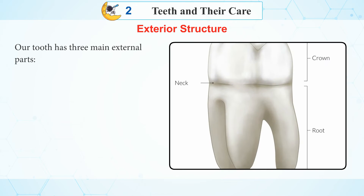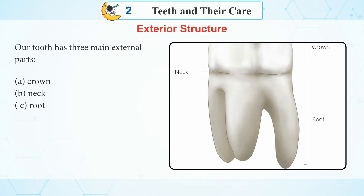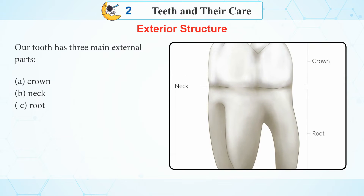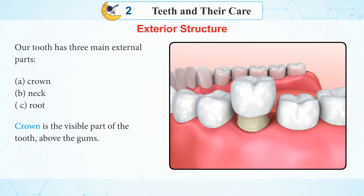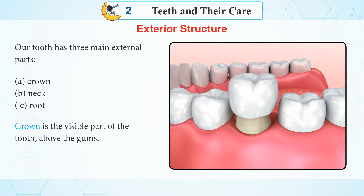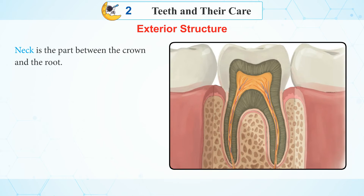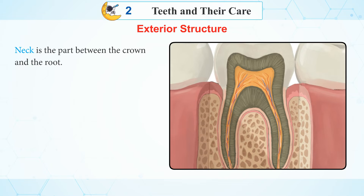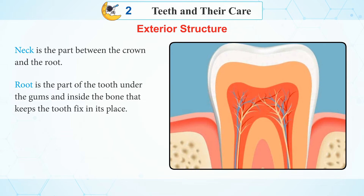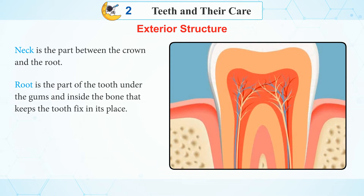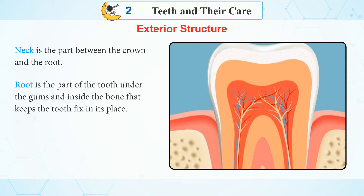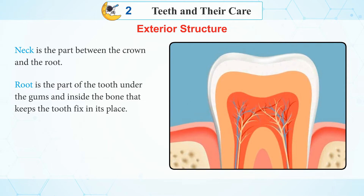Exterior structure. Our tooth has three main external parts: Crown, Neck, and Root. The crown is the visible part of the tooth above the gums. The neck is the part between the crown and the root. The root is the part of the tooth under the gums and inside the bone that keeps the tooth fixed in its place.